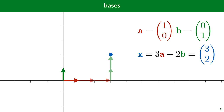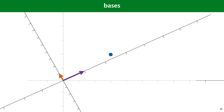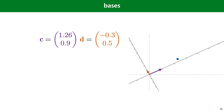We can now look at what happens if we define different basis vectors. Here we have an orange and a purple basis vector — let's call them c and d. We can describe any point in the plane by summing together a number of copies of c and a number of copies of d. If we know the coordinates of a point in our non-standard coordinate system — say the blue point is at two-and-a-half copies of c and half a copy of d — we can work that out to get the point (3, 2) in standard coordinates.